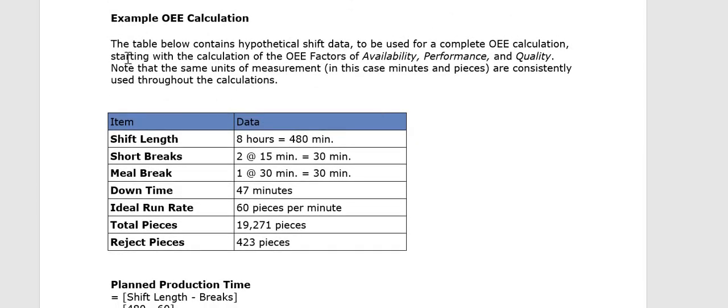Now let's look at an example of calculating OEE. The table contains hypothetical shift data for a complete OEE calculation, starting with Availability, Performance, and Quality. Note that the same units — in this case minutes and pieces — are consistently used throughout. The shift length is 8 hours, equal to 480 minutes. There are two short breaks of 15 minutes each, totaling 30 minutes, and a meal break of 30 minutes.